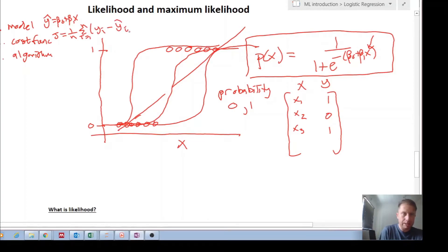That was the cost function for linear regression. And the algorithms that we used were either gradient descent or we used the normal equations. What is our algorithm doing? Remember, inside here is beta zero plus beta one x. That's what this y i is.